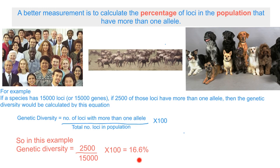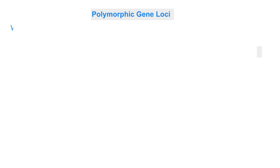If you were able to do that with a variety of different populations — populations of a species in one part of the world and another part of the world — then you could compare the biodiversity between species across the planet. Remember, population size can have a dramatic effect on the genetic diversity of a species.